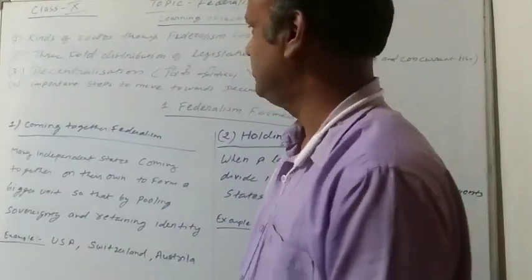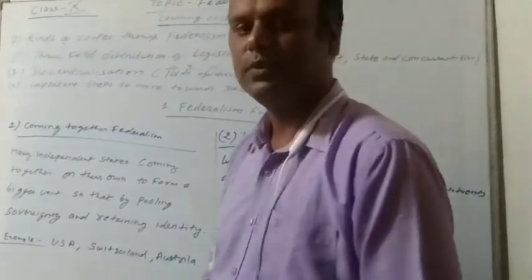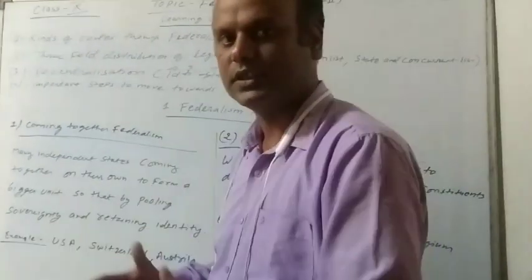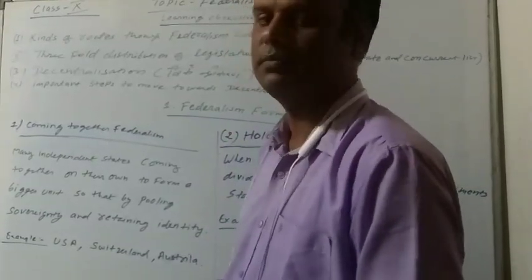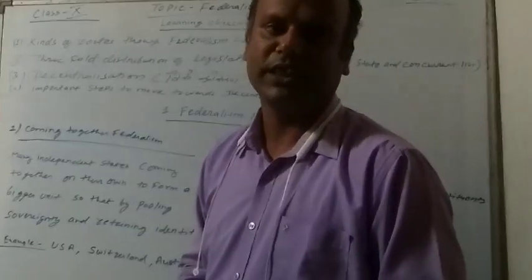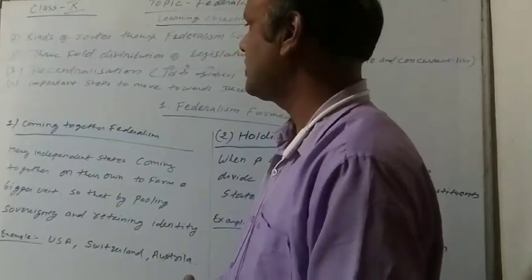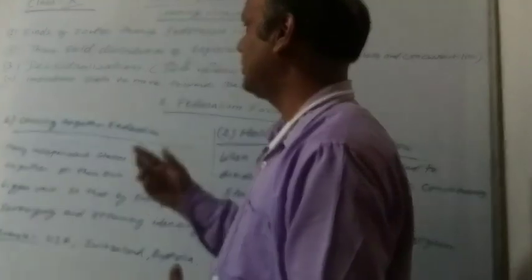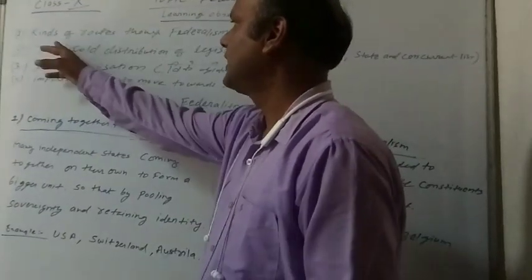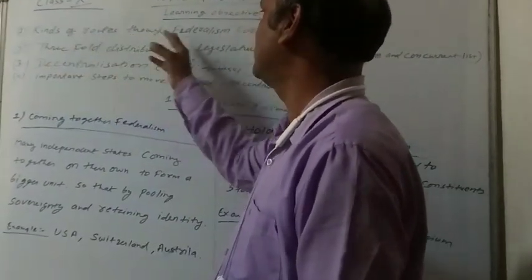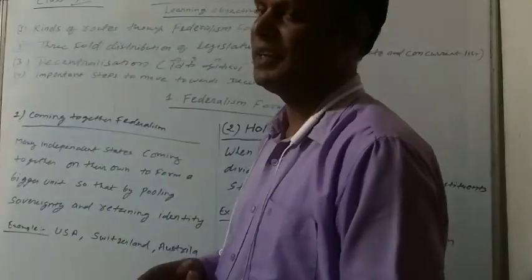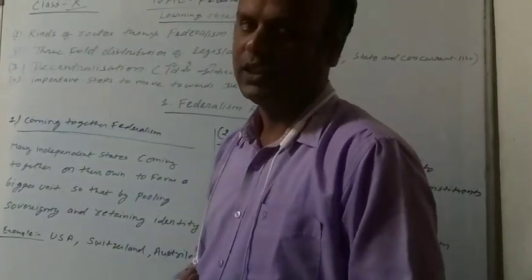Before discussing the whole chapter, I would like to explain some learning objectives of this topic. The first learning objective is the kinds of routes through which federalism had been formed.